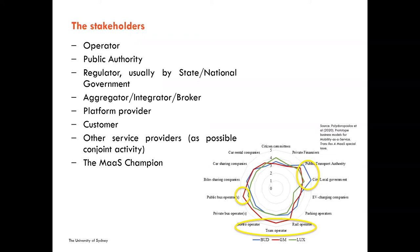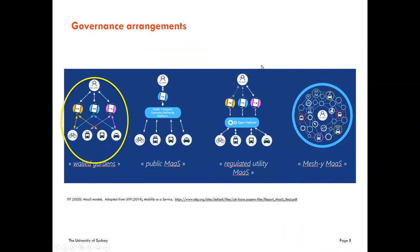The governance aspect is really important and our framework draws on the ITF 2020 and considers four different governance arrangements. You can see here four different pictures and we've adopted this as a convenient classification. The first three diagrams indicate three levels with the modes at the bottom, aggregators in the middle, and users at the top. In the walled garden diagram, the platform operators contract with the modes going downward, and the user contracts with the platform operator — typically a closed system with private sector commercial operators.